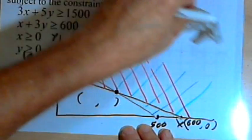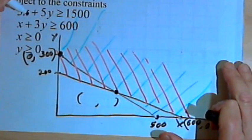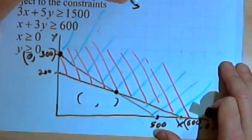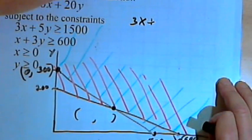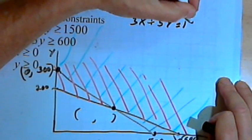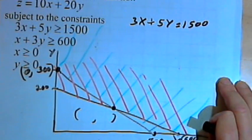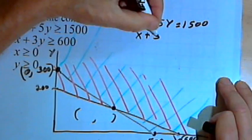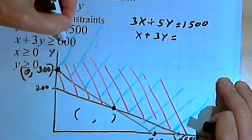I'll make a little bit of room up here. What I want to do is take the two inequalities and think of them as equations and solve the system of equations that I get. So I'm gonna have 3x plus 5y equals 1500, and then x plus 3y equals 600.